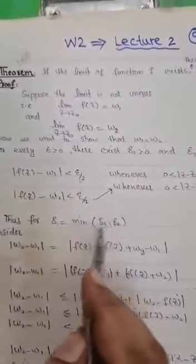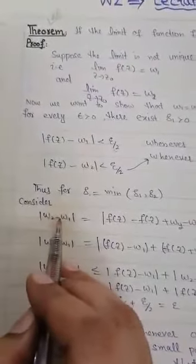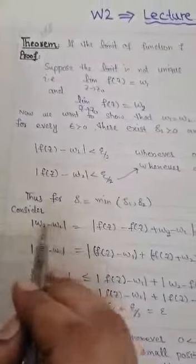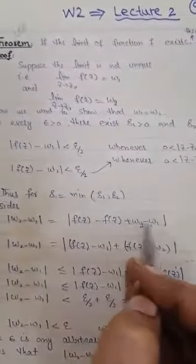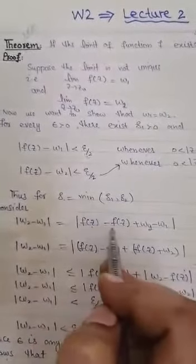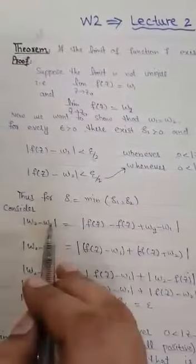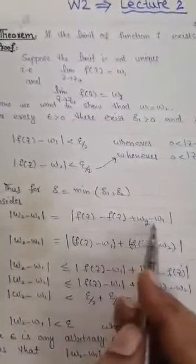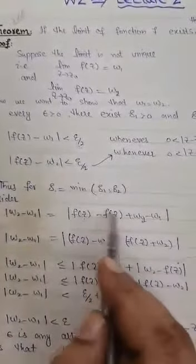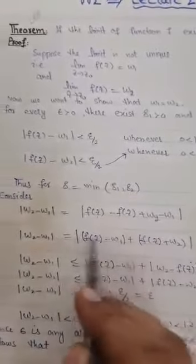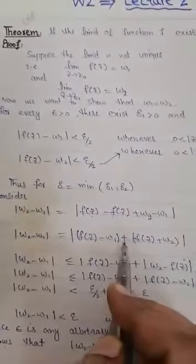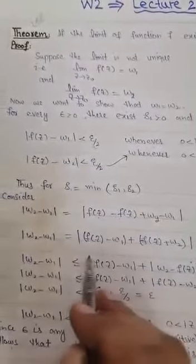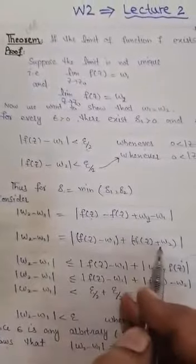Take delta = min(delta1, delta2). Now consider |w2 - w1|. We can write this as |f(z) - f(z) + w2 - w1| — we add and subtract f(z) — which gives |(f(z) - w1) - (f(z) - w2)|. Now in modulus form, since there is a plus in between, we use the triangle inequality: |z1 + z2| ≤ |z1| + |z2|, so we can separate the moduli.